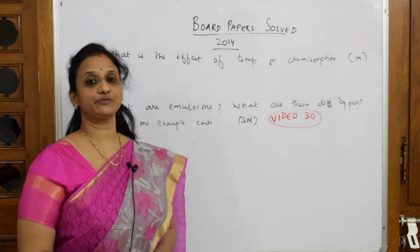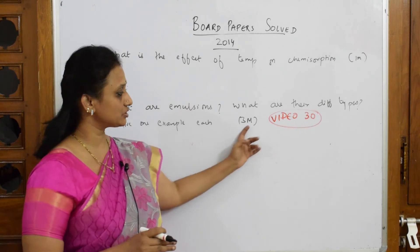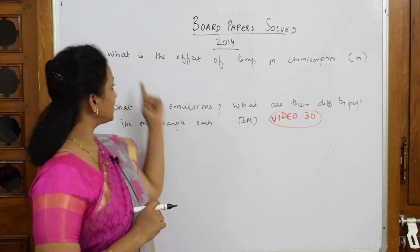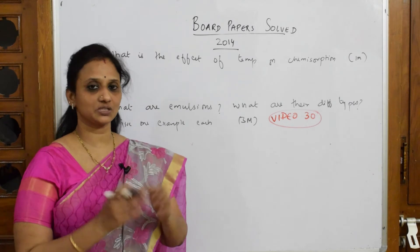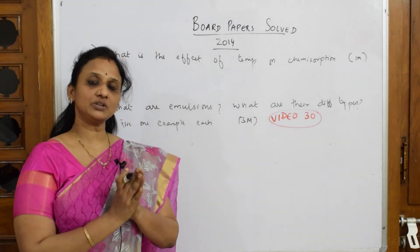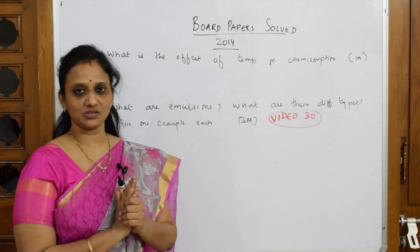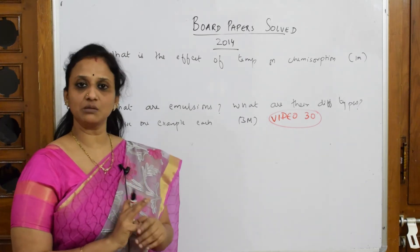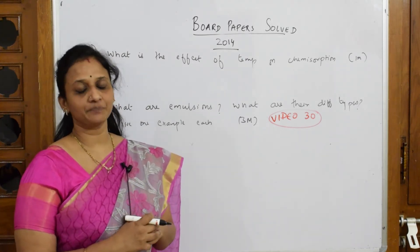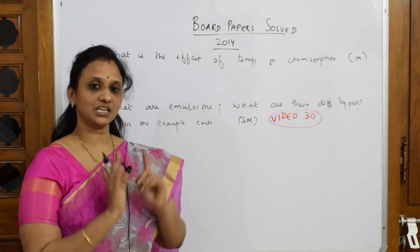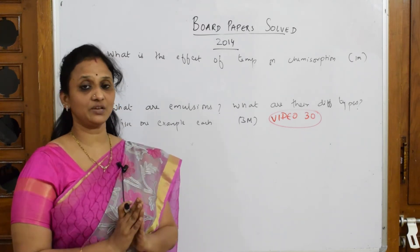Let's come back and do the 2014 paper. This is a one-mark question. The first question asks: what is the effect of temperature on chemisorption? We know that whenever temperature increases, chemisorption increases, because it's going to form chemical bonds with the adsorbent. The most important thing is: a rise in temperature favors chemisorption.